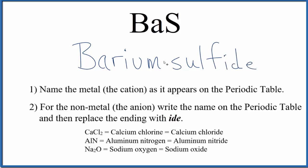So the name for BaS is barium sulfide. If you are given the name and asked to write the formula, you know that barium on the periodic table is in group two — that's two plus — sulfur is two minus, so you'd have one barium and one sulfur: BaS.